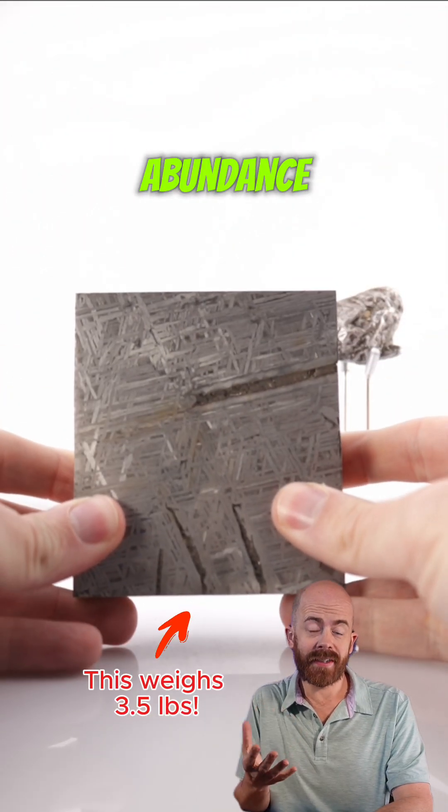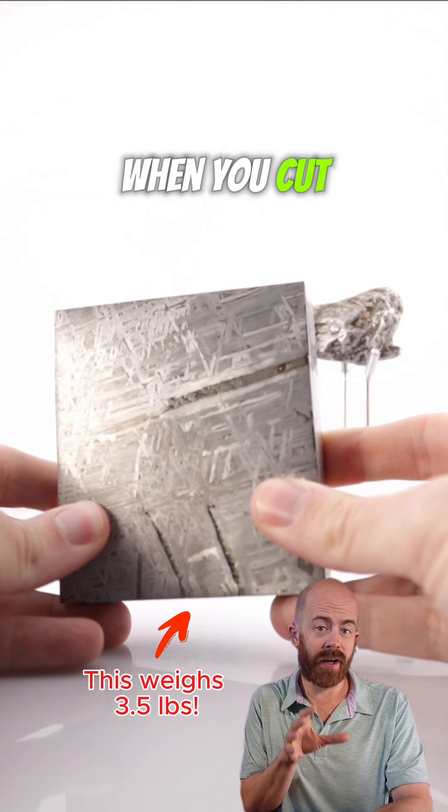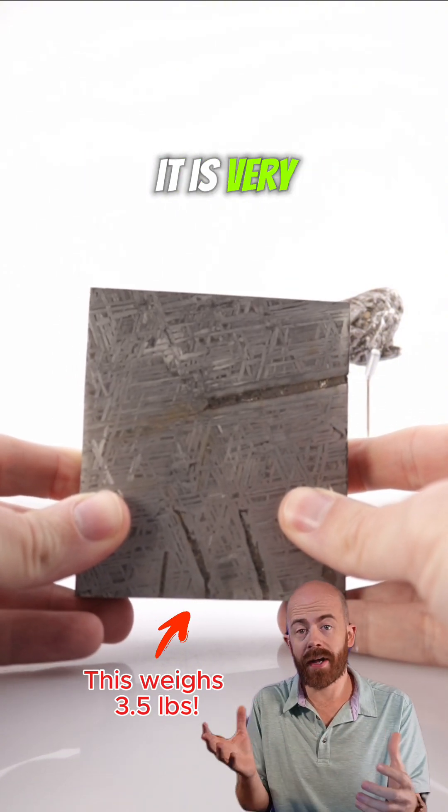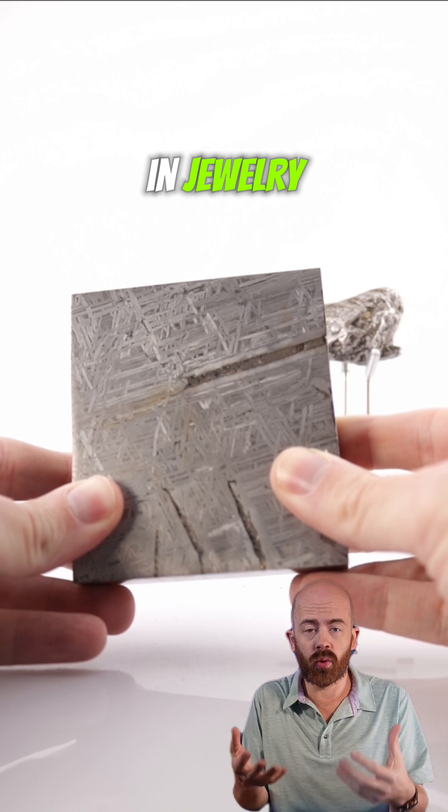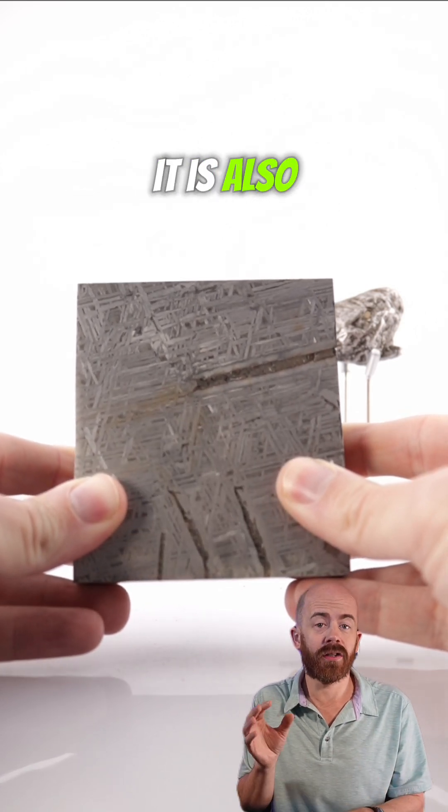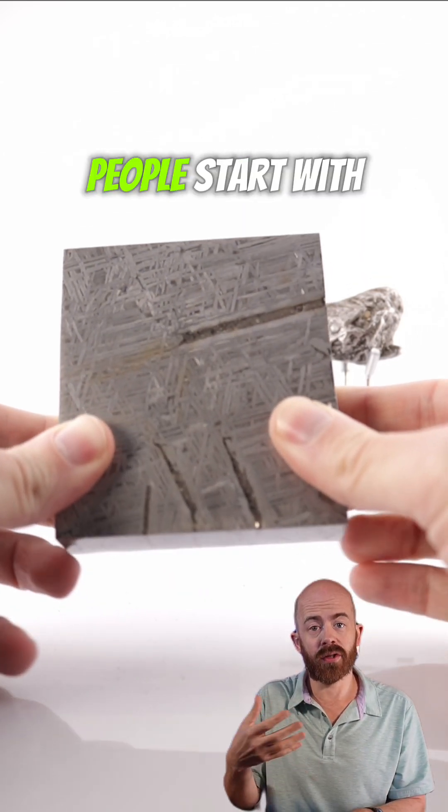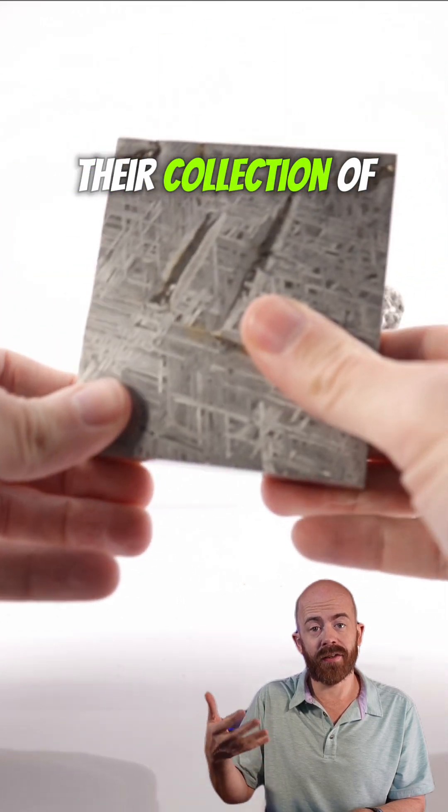Because of its abundance and these cool patterns that display when you cut into the meteorite, it is very common. It's used a lot in jewelry. Lots of collectors have it. It is also a starting piece that a lot of people start with when they begin their collection of meteorites.